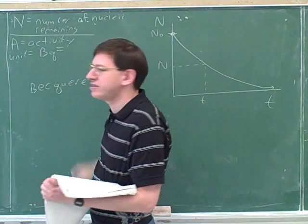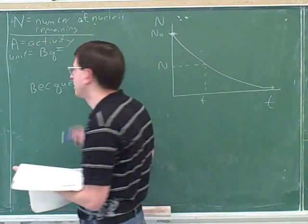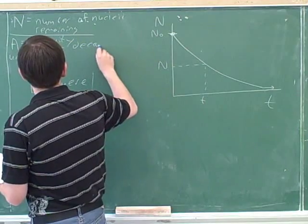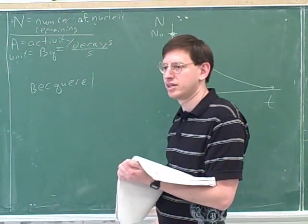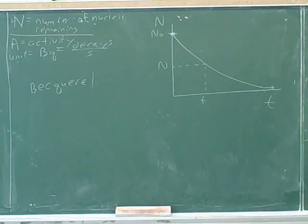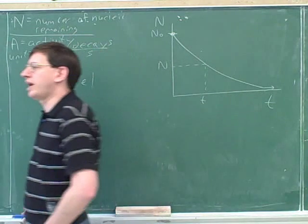Now, what would that be then? A Becquerel would be decays per second. It's pretty important to memorize what activity is. It's the number of decays per second. Well, that really tells you what the activity means. It tells you how many decays are happening each second in a sample.